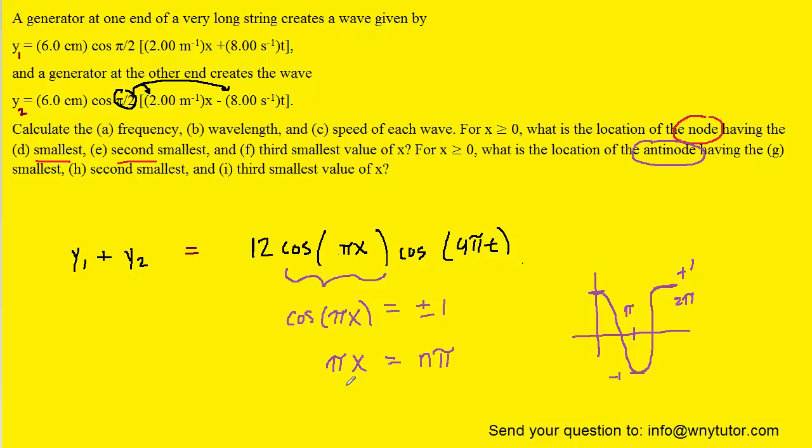When we solve for x by dividing through by π, we can see that x has to equal n. Again, the unit there will be meters because when we divide it by π, we divide it by an inverse meter.